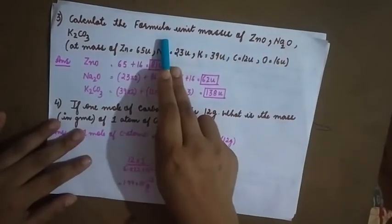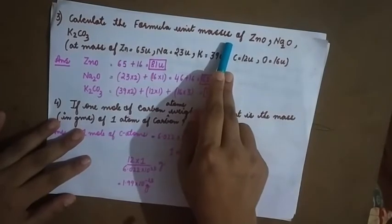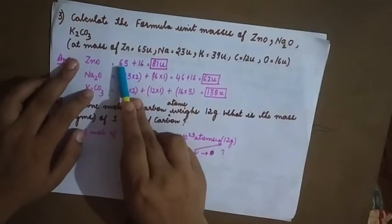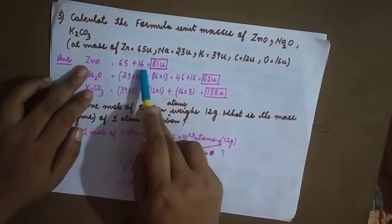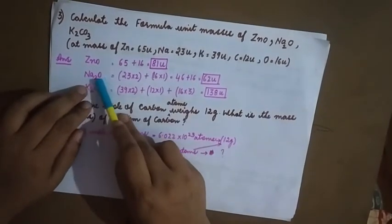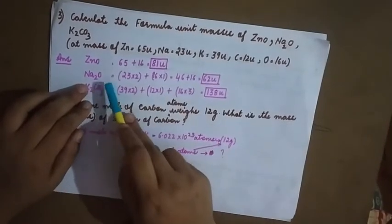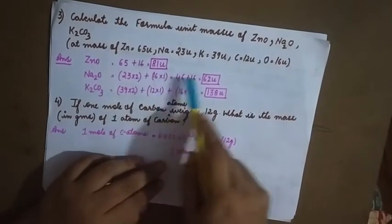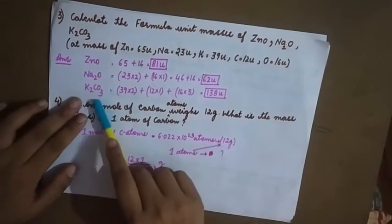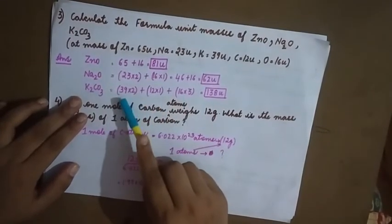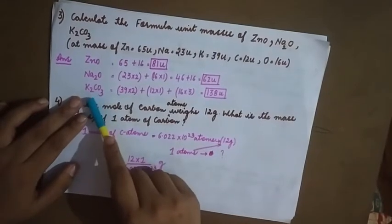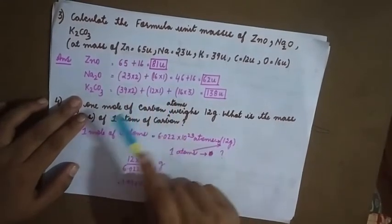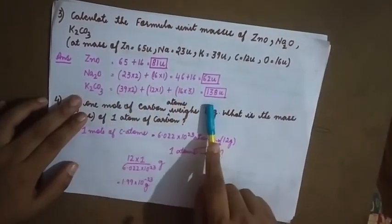Calculate the formula unit mass of ZnO, Na₂O, and K₂CO₃. To calculate formula unit mass you need to know the atomic mass. For zinc oxide: atomic mass of Zn is 65 u, O is 16 u; 65 + 16 = 81 u. For Na₂O: sodium is 23 × 2 plus 16 × 1 = 62 u. For K₂CO₃: potassium is 39 × 2, carbon is 12 × 1, oxygen is 16 × 3; adding gives 138 u.